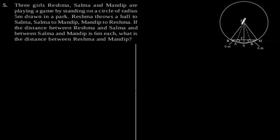So, OR is equal to OS is equal to OM is equal to 5 meter. And distance between Reshma and Salma is 6 meter and Salma and Mandip is 6 meter. So, we need to find the distance between Reshma and Mandip, that is RM.